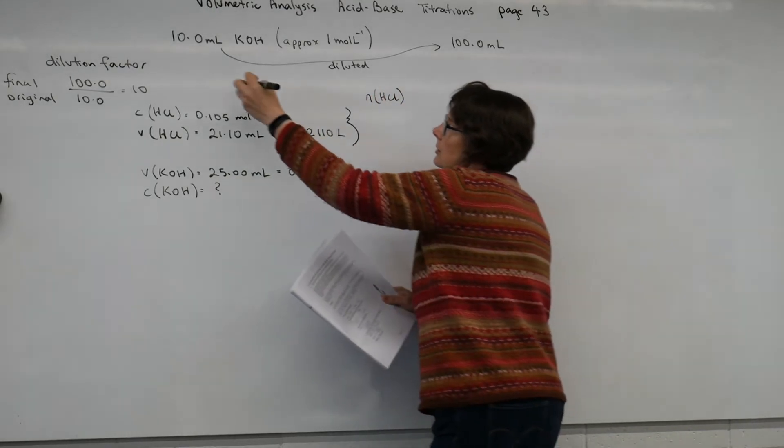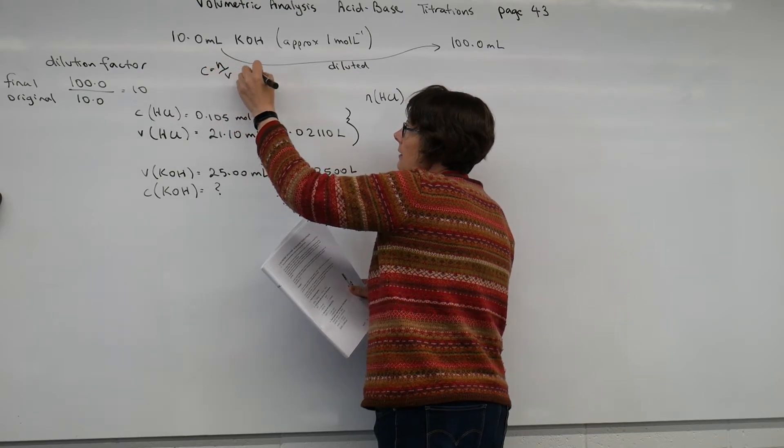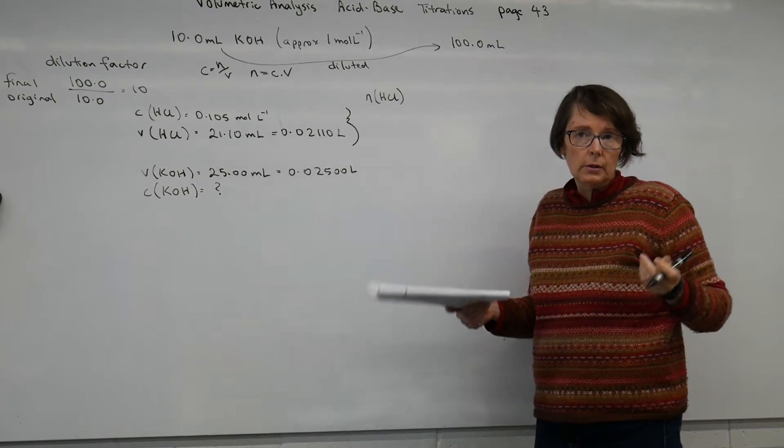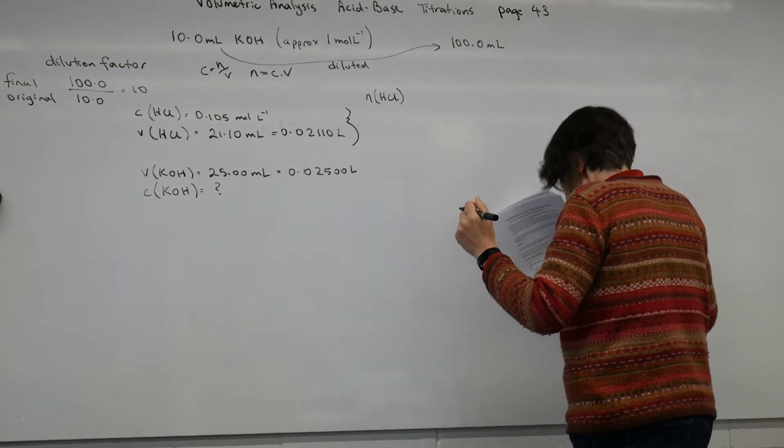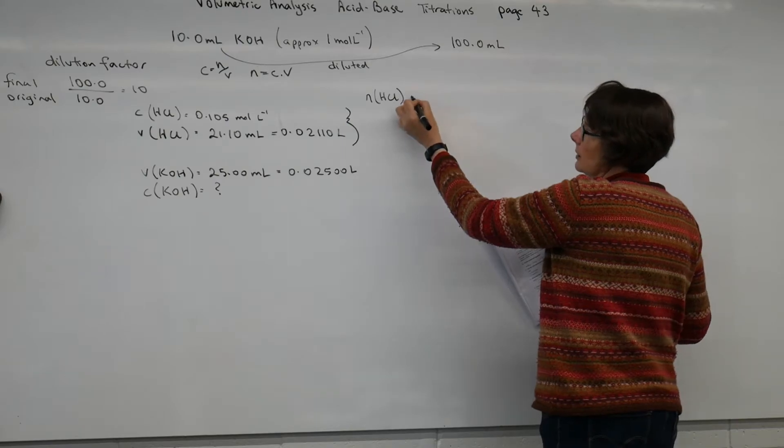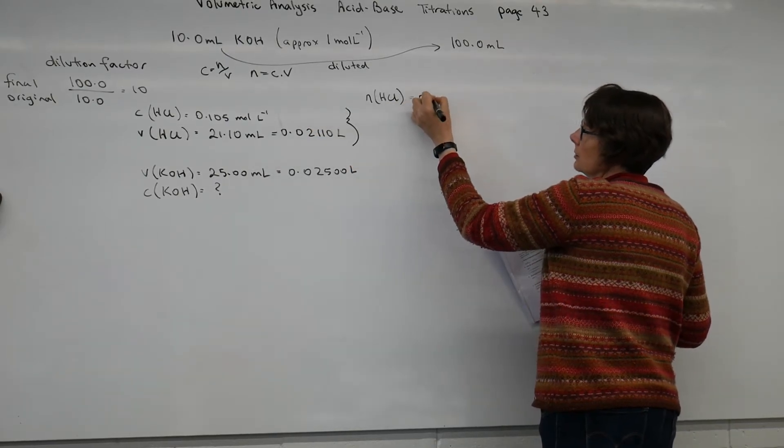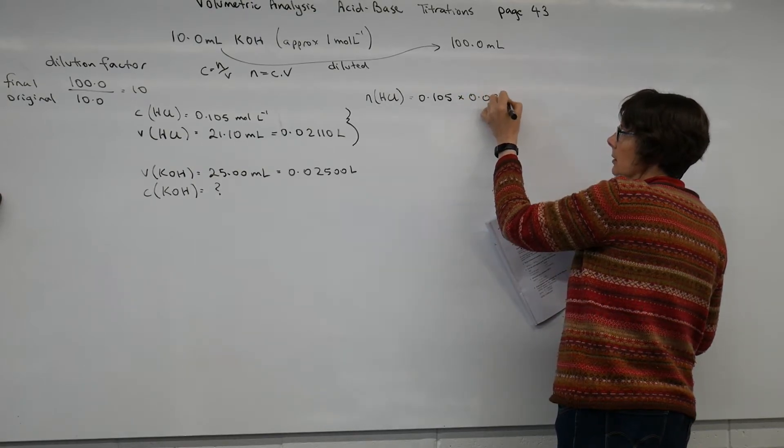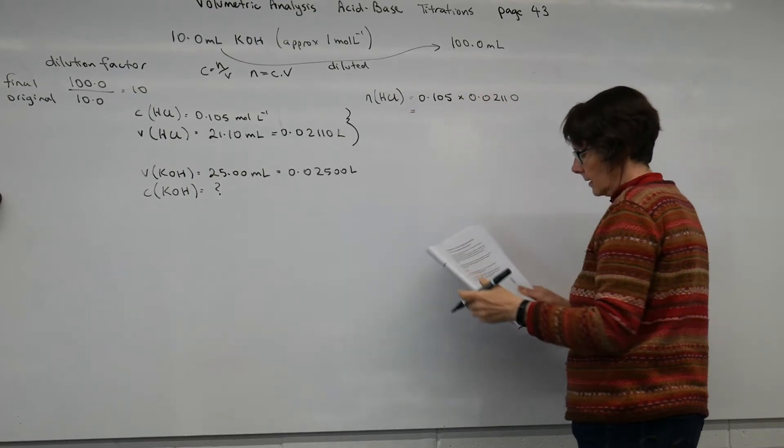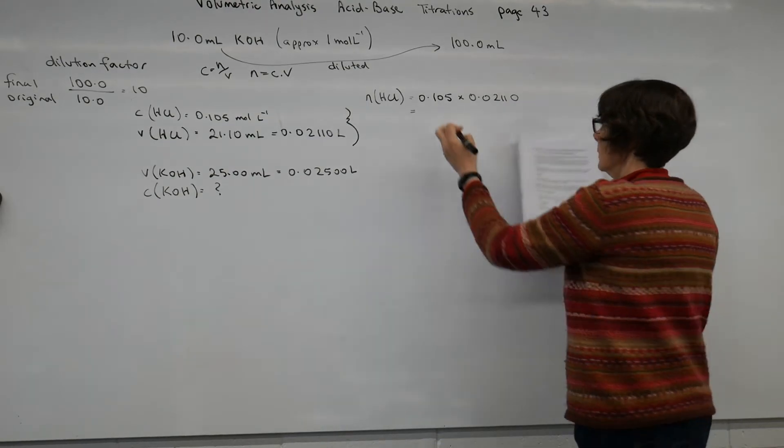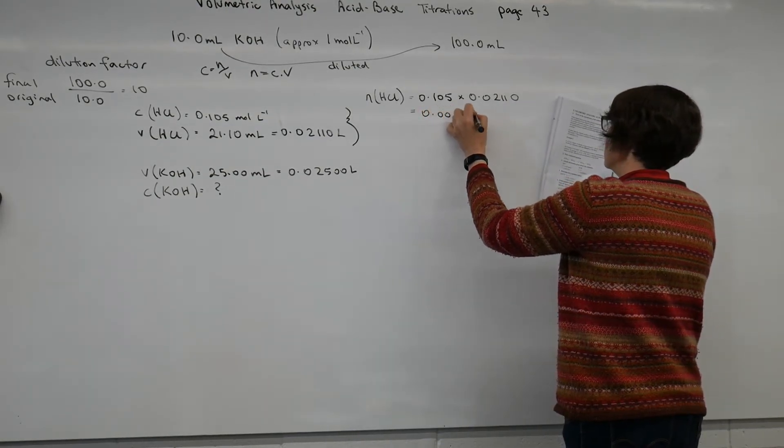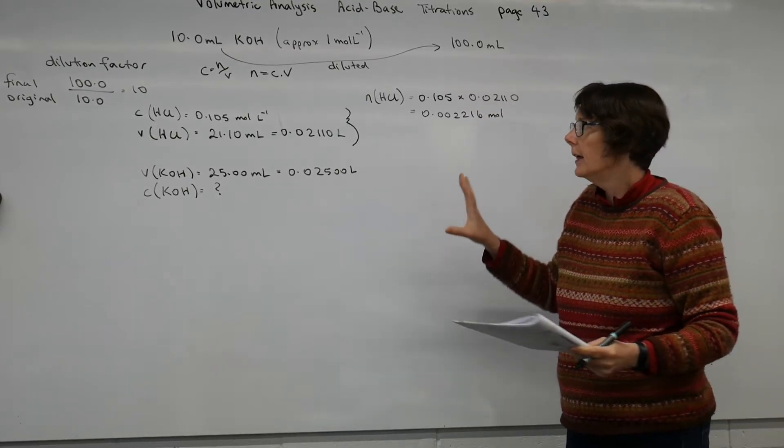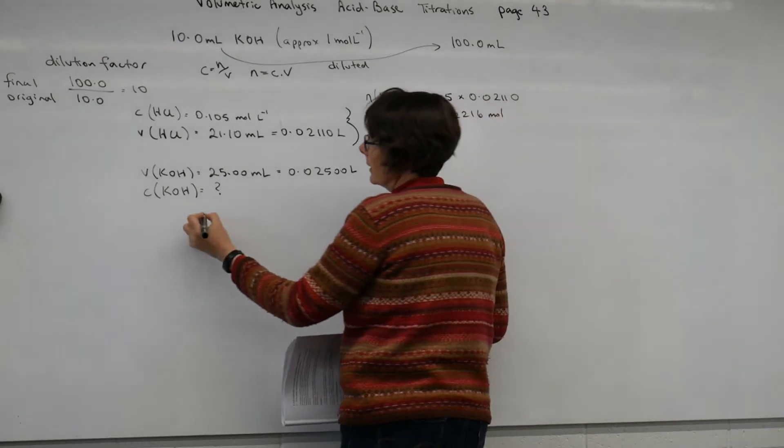We're using C equals N on V or N equals CV for these because these are all in solution. So my moles of hydrochloric acid equal my concentration multiplied by the volume. 0.002216 moles. Then I need to look at the balanced chemical equation.